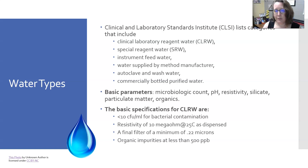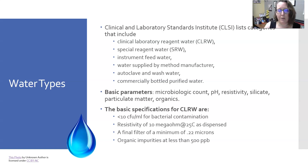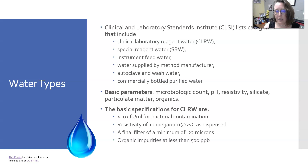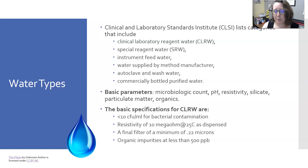The basic parameters that differentiate these types of water are microbiological counts, pH, resistivity, silicate content, particulate matter content, and organic content. The basic specs for clinical laboratory reagent water are 10 CFU or less per ml for bacterial contamination, a resistivity of 10 mega-ohms at 25 degrees Celsius as dispensed, a final filter of a minimum of 0.22 microns, and organic impurities at less than 50 parts per billion.